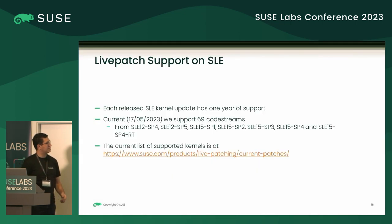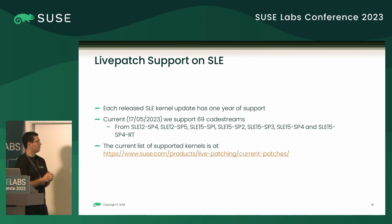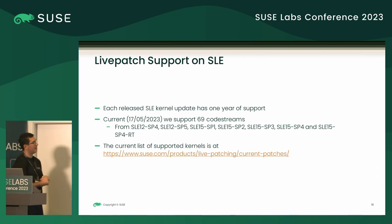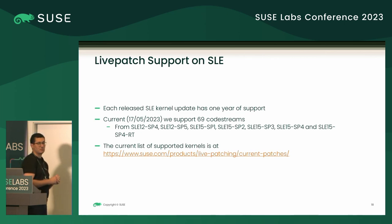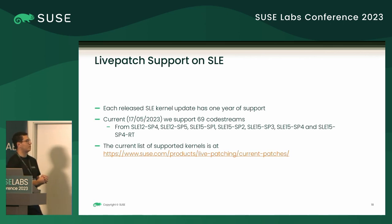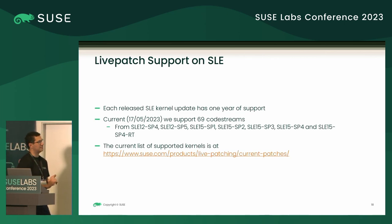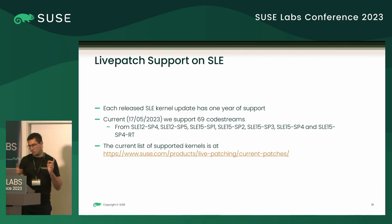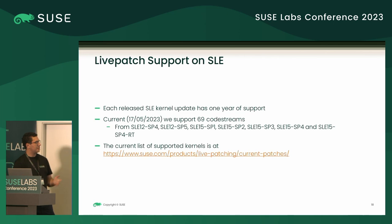The support for livepatches on SLEE: each released SLEE kernel update has one year of support. So if a new update is released today, we will create livepatches until the same day next year. Currently we have 69 code streams being supported, from SLEE 12 SP4, SP5, 15 SP1, SP2, SP3, SP4, and SLEE 15 SP4 RT — which is the first code stream with RT support. We have a current list of all supported kernels on the SUSE page, updated each time a new code stream enters or exits support, with kernel version, start of support, end of support, and code stream information.